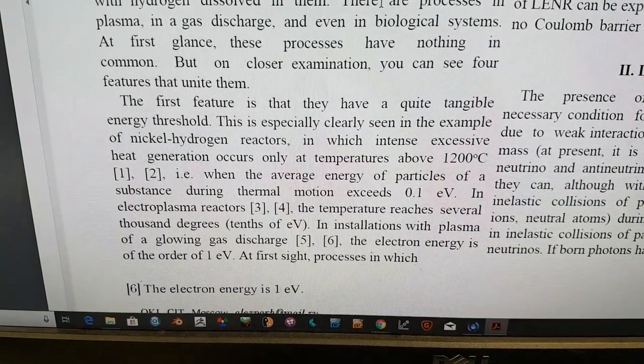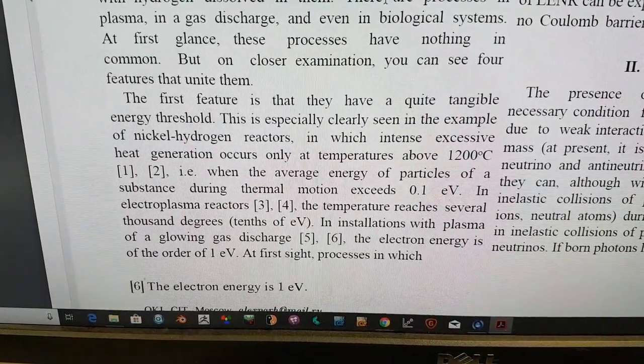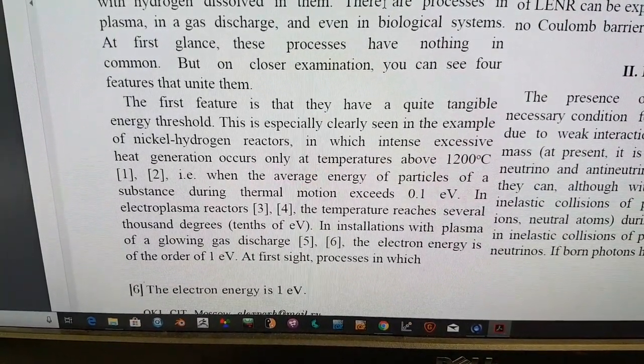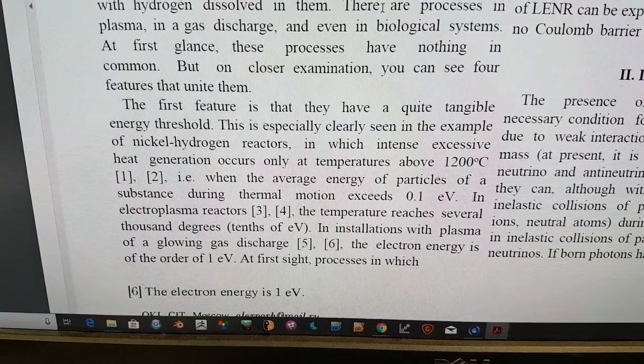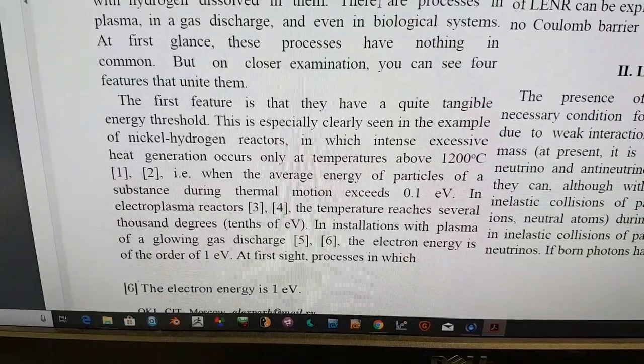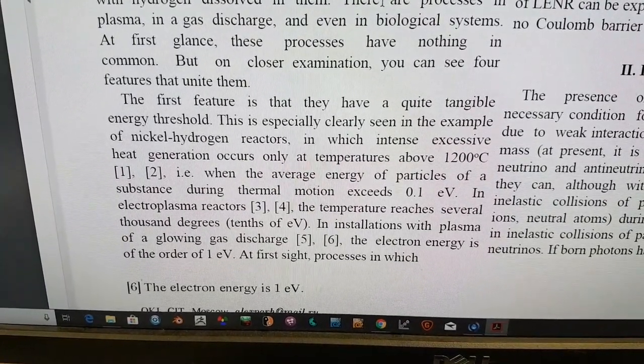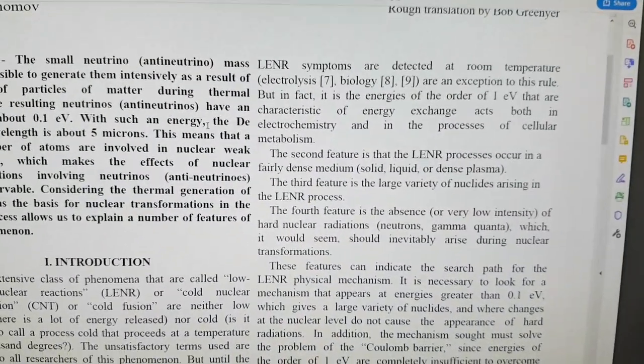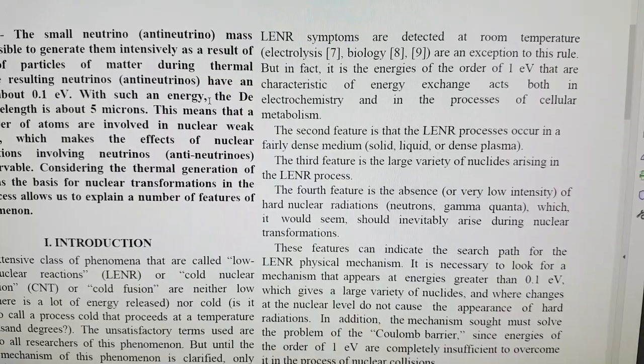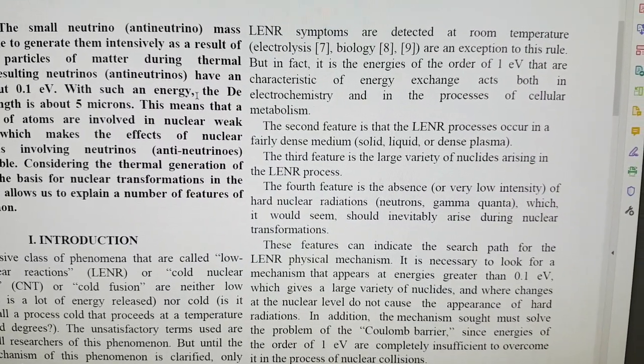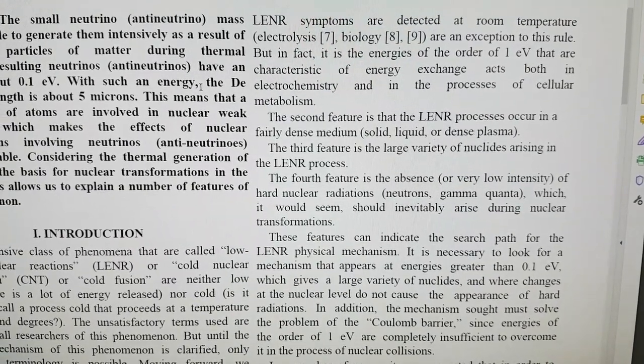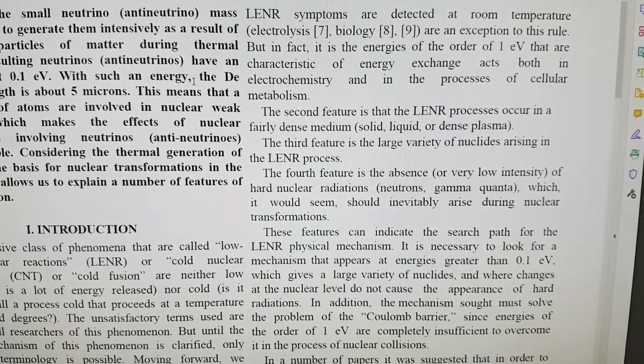When the average energy of particles of a substance during thermal motion exceeds 0.1 eV. In electroplasma reactors, the temperature reaches several thousand degrees. At first sight, processes in biological systems are detected at room temperature are an exception, but in fact, it is the energies of the order of one eV that are characteristic of energy exchange acts in both electrochemistry and in the processes of cellular metabolism.